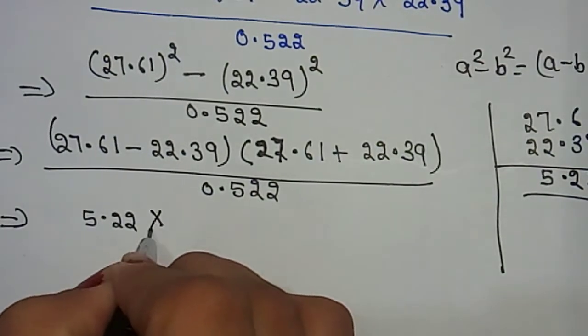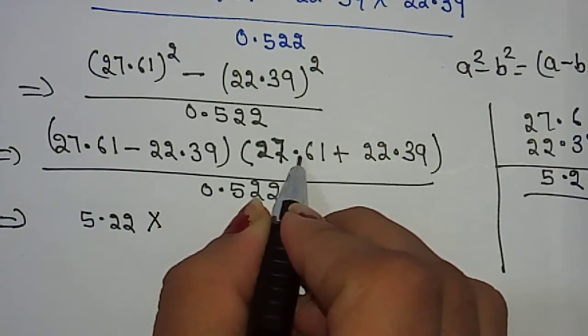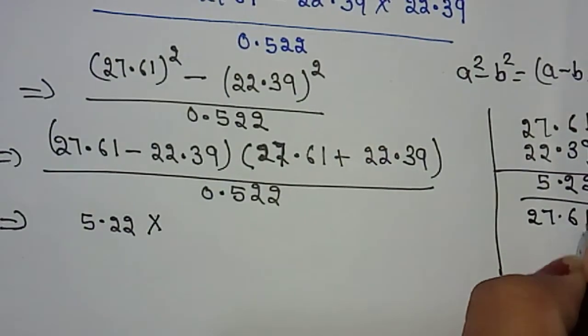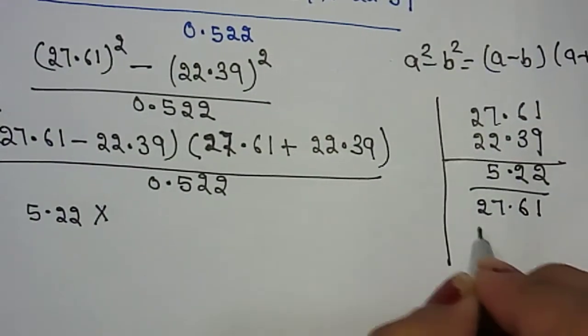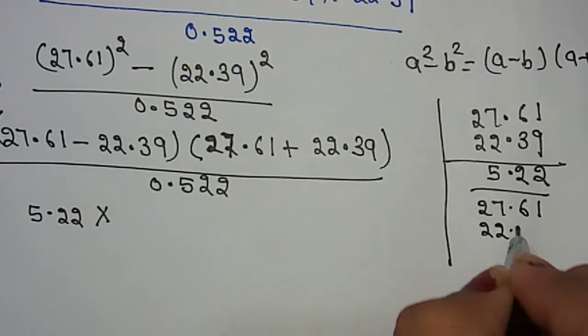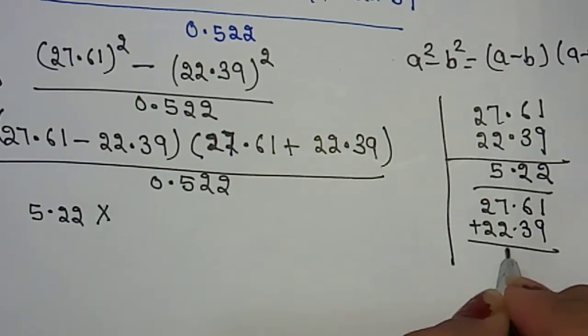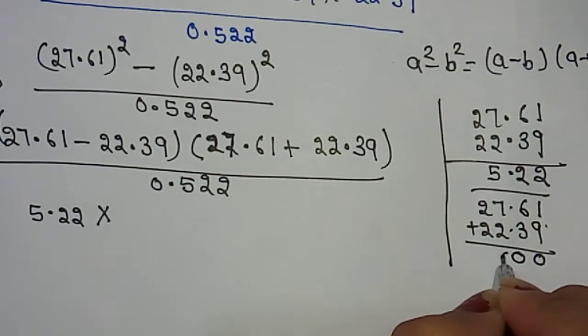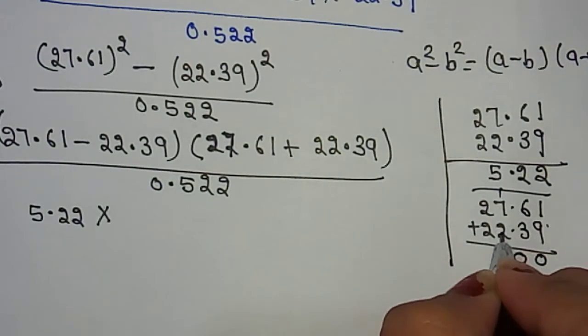Then add: 27.61 + 22.39. Add these two numbers: 9 + 1 = 0 carry 1, 3 + 6 = 9, 2 + 7 = 9, and 2 + 2 with the carry makes 5. Your answer is 50.